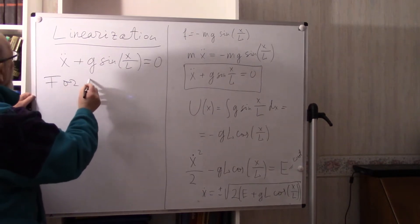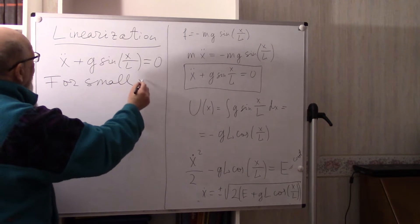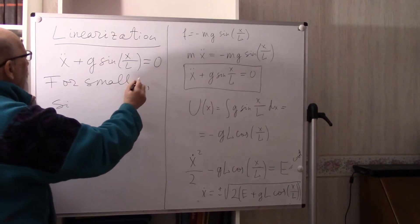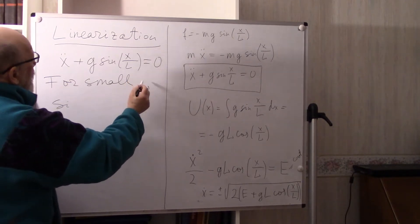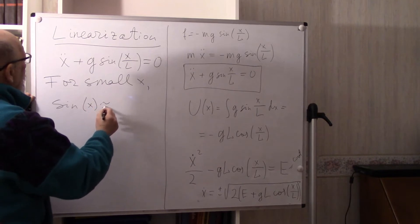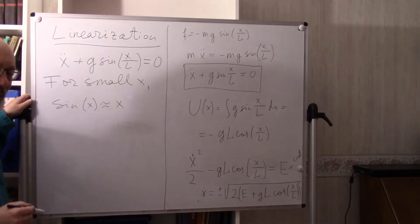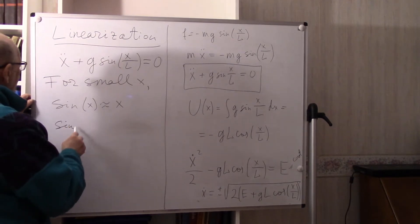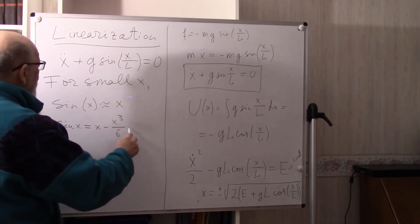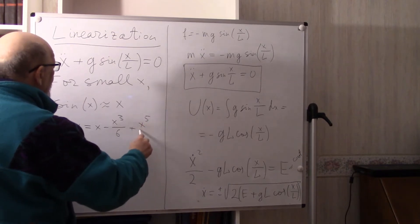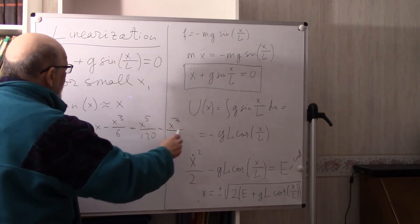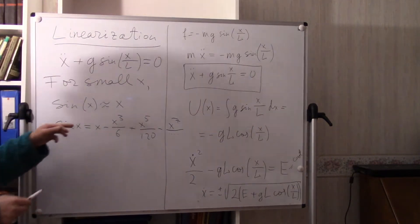But we know one interesting thing: for small X, sine of X is close to X. In fact, sine(X) equals X minus X cubed over 6 plus X to the fifth over 120 minus X to the seventh over something larger, and so on. If X is small, say less than 0.01, then X cubed will be less than 10 to the minus 6, and higher-order terms are even smaller.